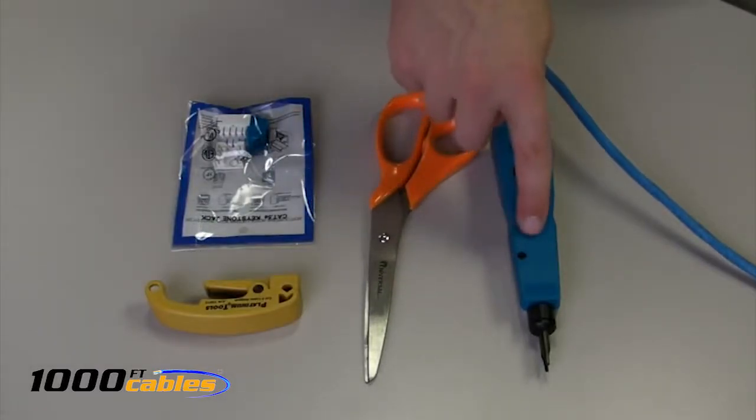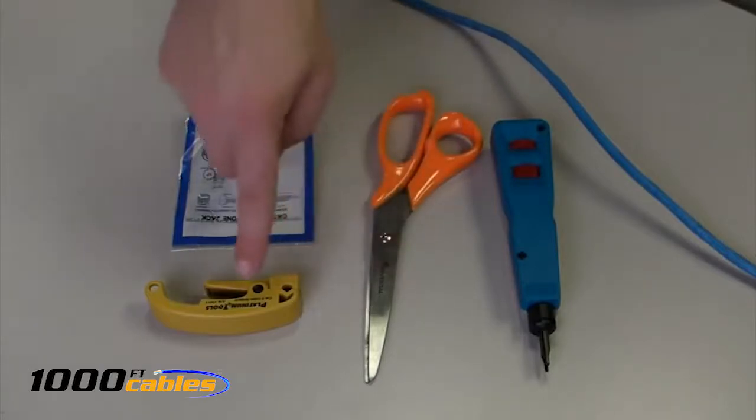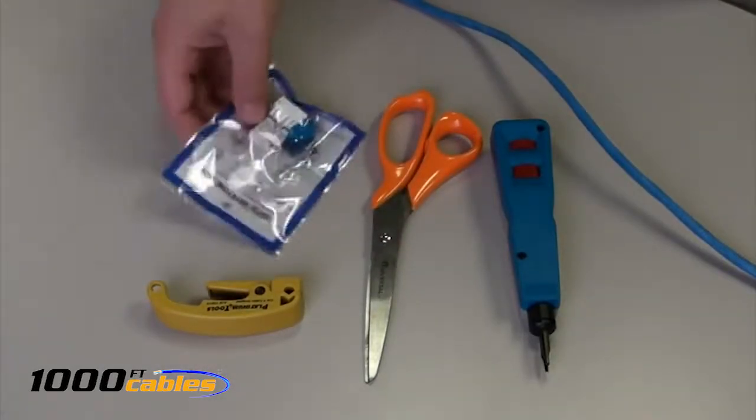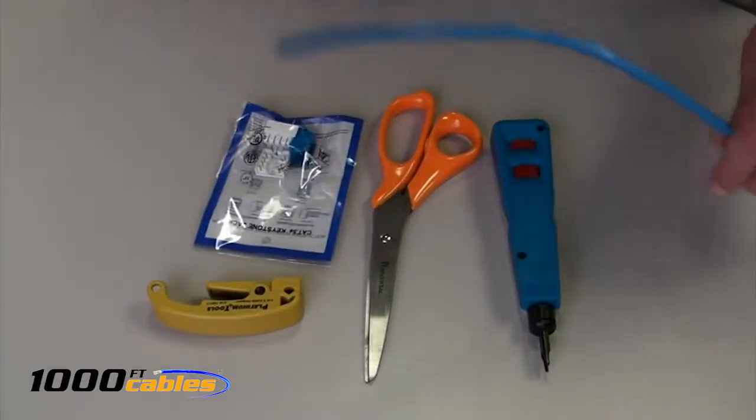We have our punch down tool, pair of sharp scissors, the Cat5 cable stripper, our Cat5 keystone jack, and of course some Cat5 cable.